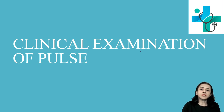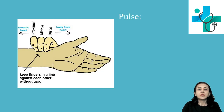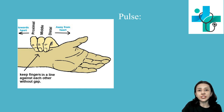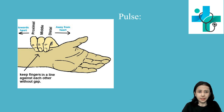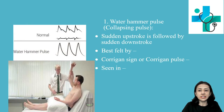Hello everyone. Today we will discuss different types of pulse present in different pathological conditions. Starting with the definition of pulse: pulse is expansion and elongation of the vessel wall due to pressure changes in the heart during cardiac cycle. Now we will discuss different types of pulse in different pathological conditions.